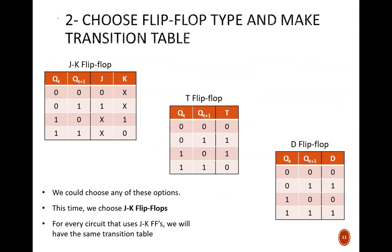Step 2 of our design process is the simplest. Choose a flip-flop type. We could choose any of these options. This time, let's go with JK flip-flops. So, this top transition table is the one we'll use.